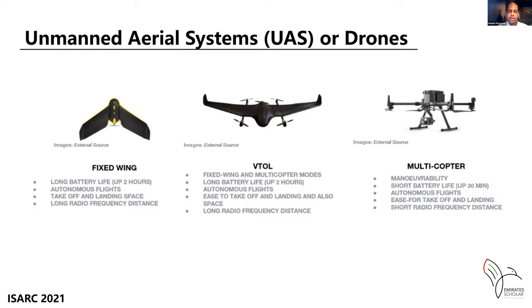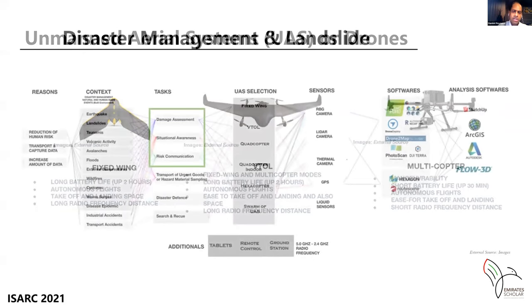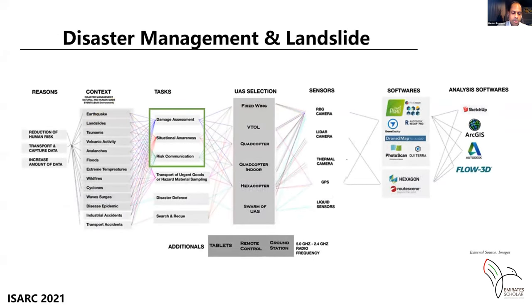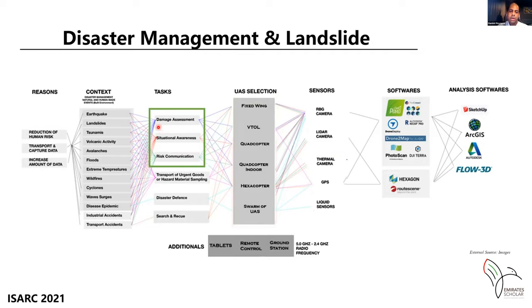For disaster management and landslides, there are three important reasons to adopt drones according to the literature: human risk reduction, transport and data capture, and increasing the amount of data. There are three tasks for landslides we focus on: damage assessment, situation awareness, and risk communication. After that, there is a selection of materials, drone sensors, software, and analysis carried out according to the task and the outcomes we want to generate.